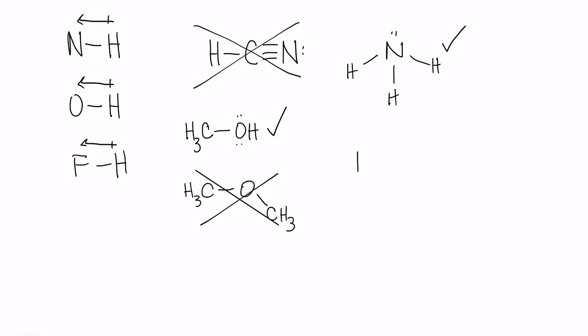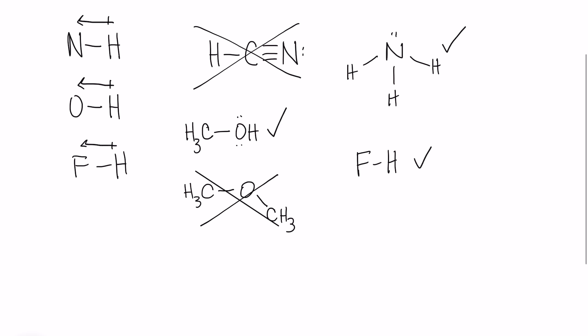Fluorine is pretty easy because the only molecule where we're really going to see hydrogen bonding is hydrofluoric acid, HF. Fluorine doesn't tend to make multiple bonds, so the only way for it to be bonded there is to be attached to the hydrogen. Those are examples of molecules that do and do not hydrogen bond. Again, we're looking for nitrogen, oxygen, and fluorine, and they have to have a hydrogen that's actually attached to them.